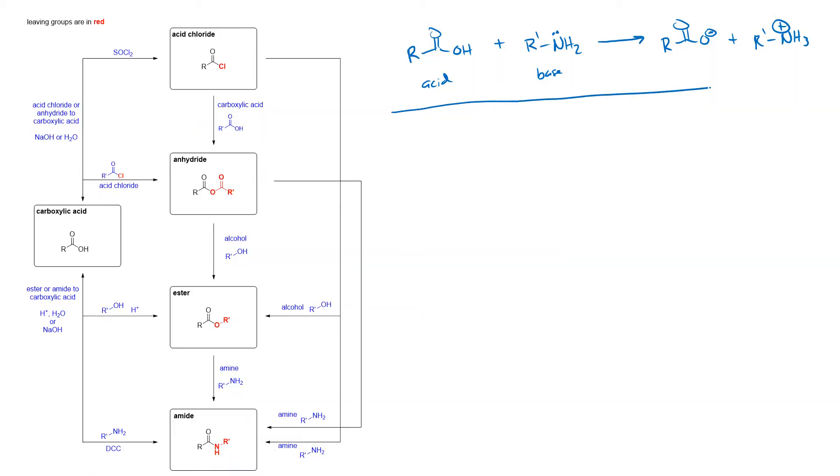So how do we get around that? We use something called DCC. There are a million other reagents that do this, but this is the one that we're going to talk about.